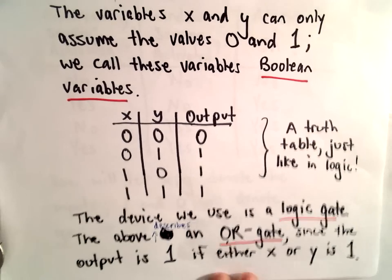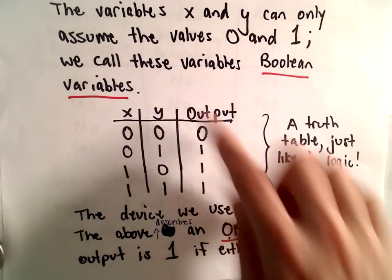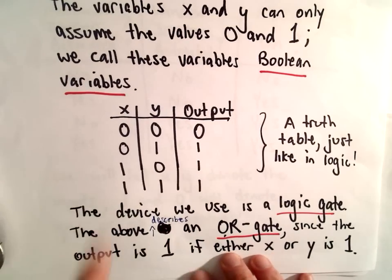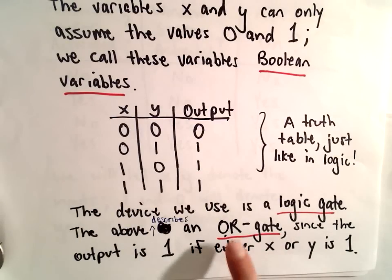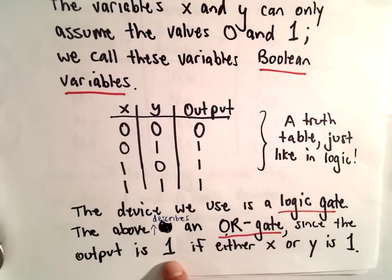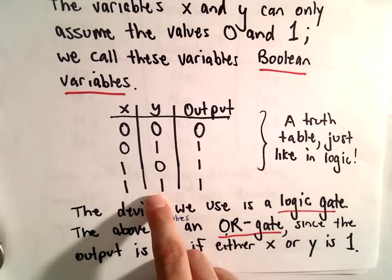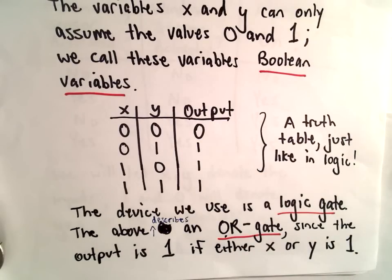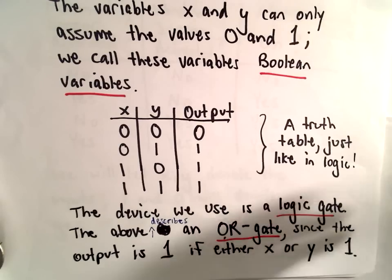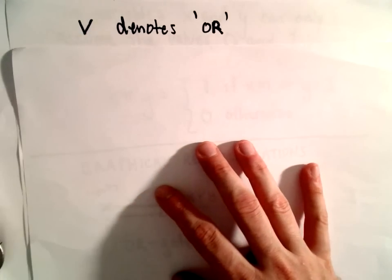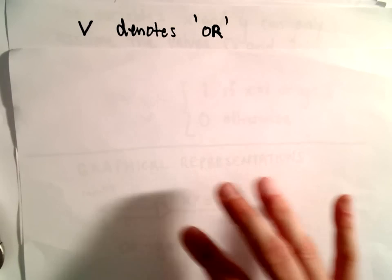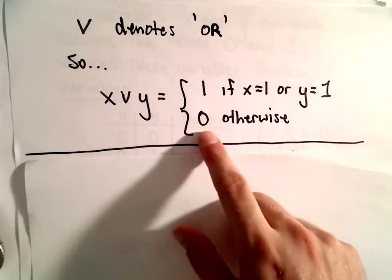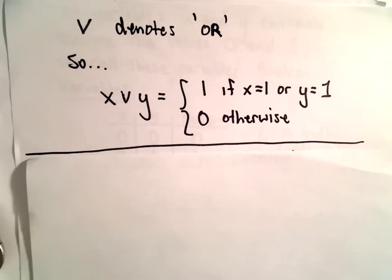The device we use is called a logic gate, and its effect is summarized in the truth table. This particular logic gate is called an OR gate. An OR gate is one whose output is going to be a one if either x or y is equal to one. The symbol for OR is a little wedge or 'v' shape. We can say that x OR y equals one if either x or y is one, and zero otherwise.